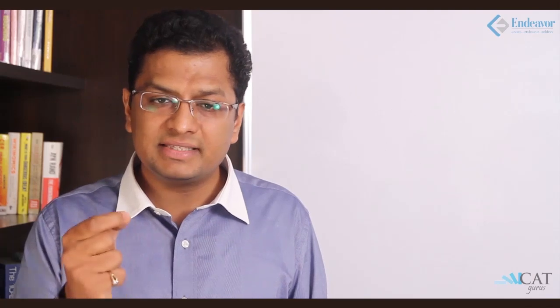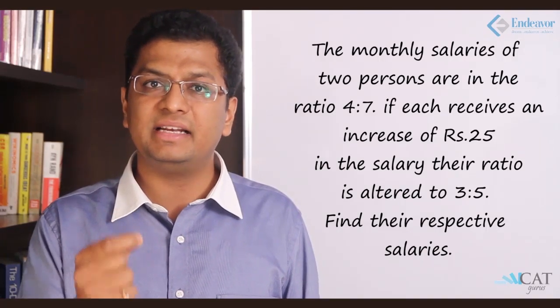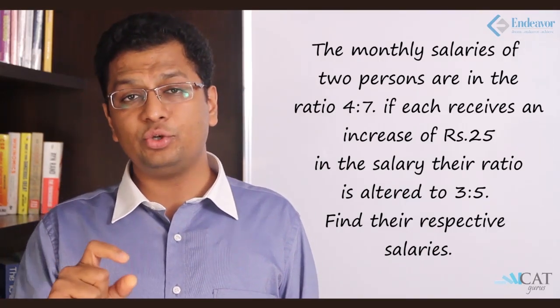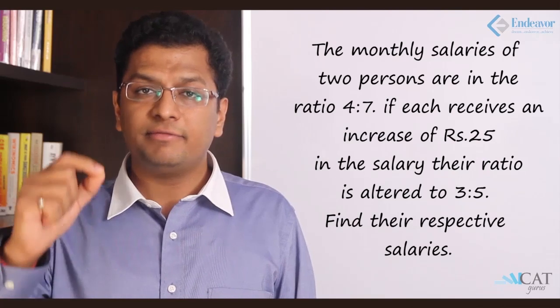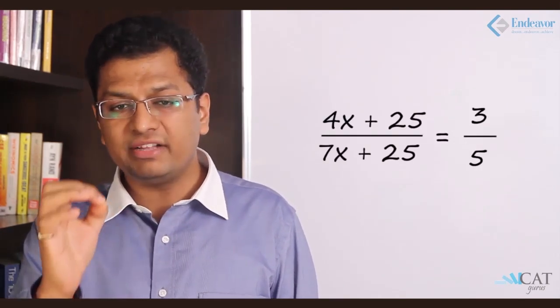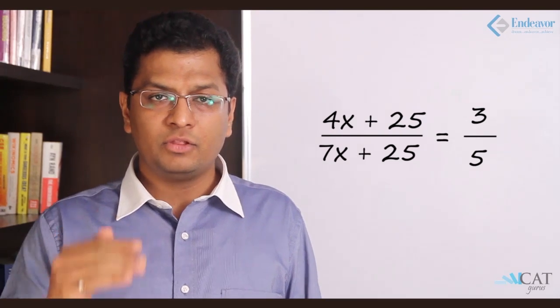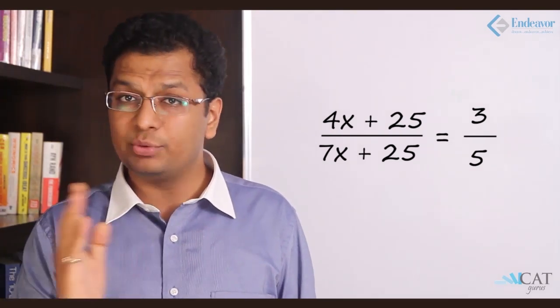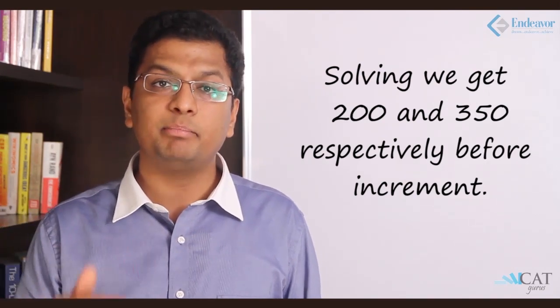Let's take another one. The monthly salaries of two persons are in the ratio of 4 is to 7. If each of them receives an increase of rupees 25 in their salary, the ratio is altered to 3 is to 5. Find their respective salaries. Let's take the first one: 4 is to 7 is the ratio of their salaries, so let's assume that the first one is 4x and the second one is 7x. If we add 25, that is the increment that they receive, so 4x plus 25 and the second one becomes 7x plus 25. 4x plus 25 upon 7x plus 25 is the new ratio which is nothing but 3 is to 5. Solving this we can get 200 as A and 350 as B. This is the salary before the increment.